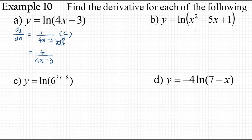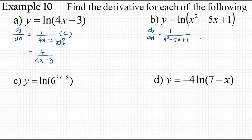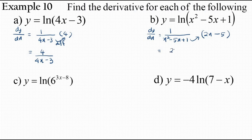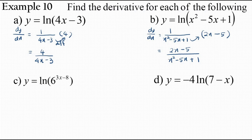Part b: y equals ln(x² − 5x + 1). So dy/dx equals 1 over (x² − 5x + 1) times the derivative of the function. Differentiating x² − 5x + 1 gives 2x − 5, so the final answer is (2x − 5) divided by (x² − 5x + 1).